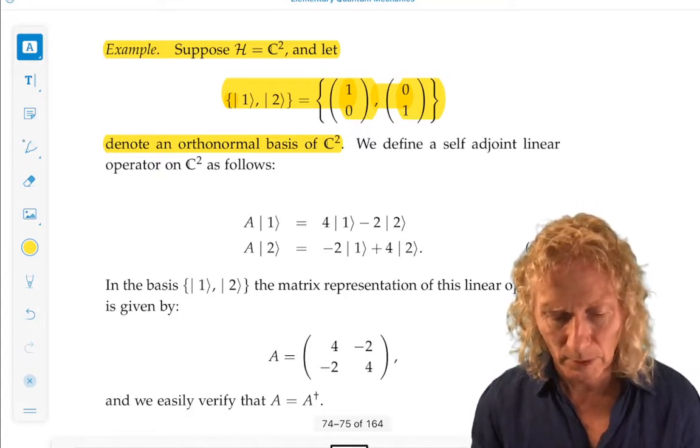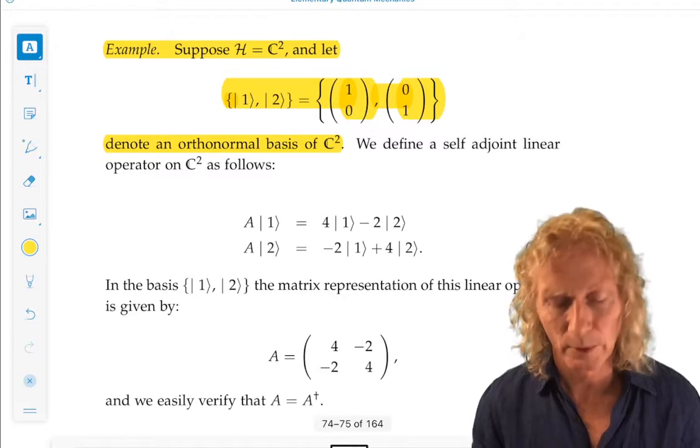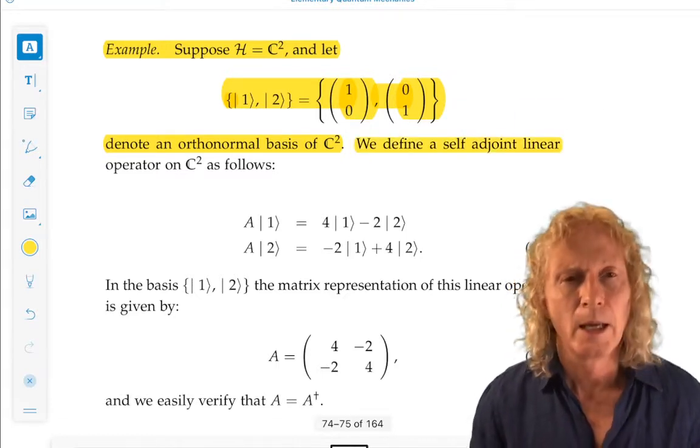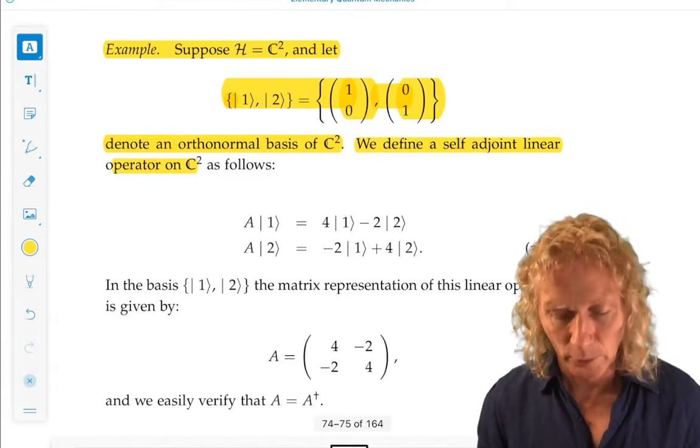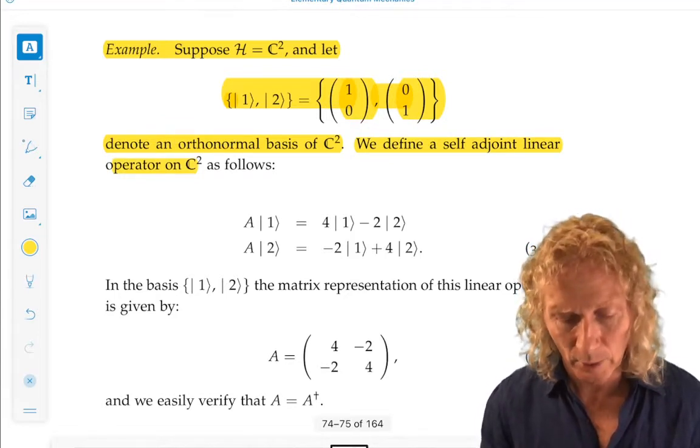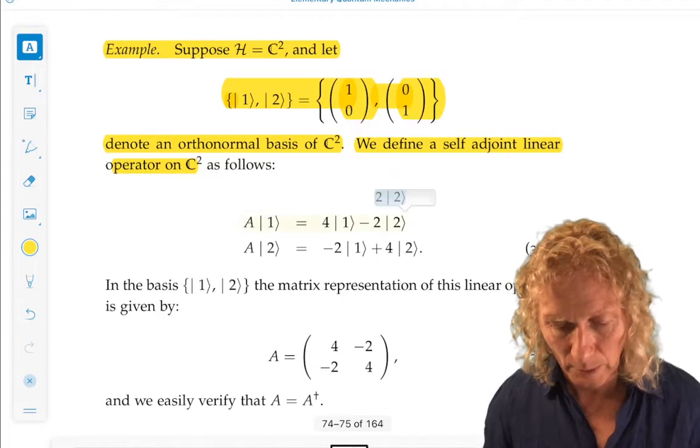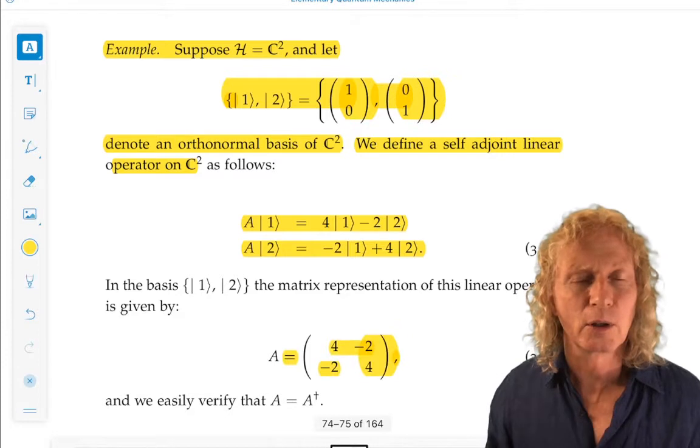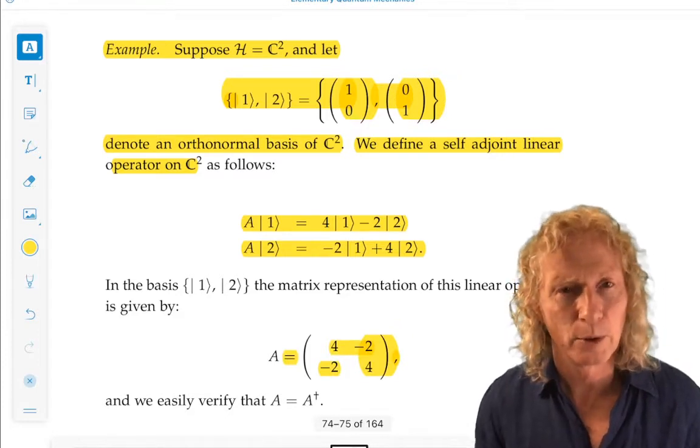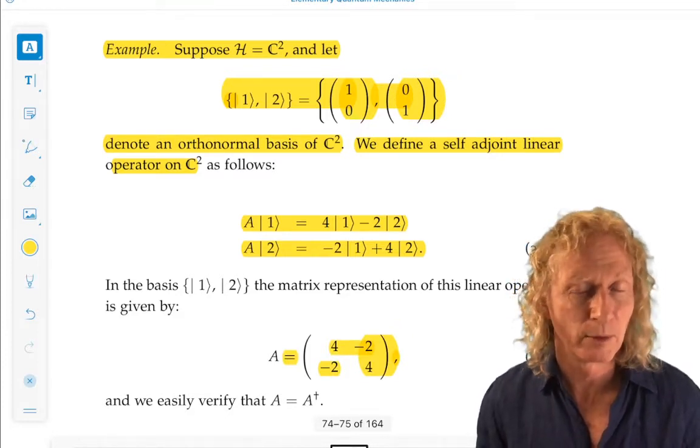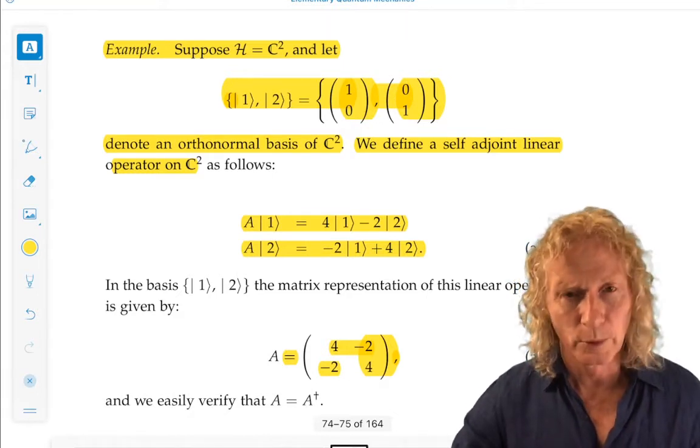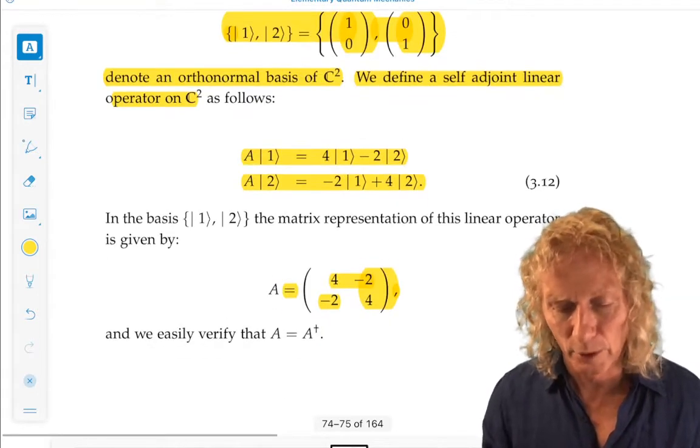So on this space, with this basis, we define a self-adjoint linear operator. And the operators are defined by how they act on basis elements. We can look at the matrix representation, and it's clear that the transposed complex conjugate—I mean everything is real in this case, the coefficients are real—is equal to itself. So it is clearly self-adjoint.